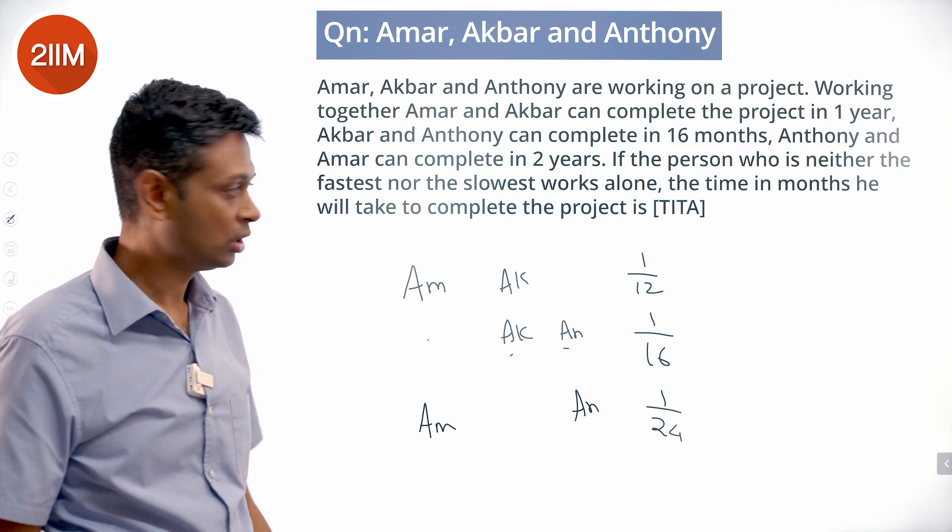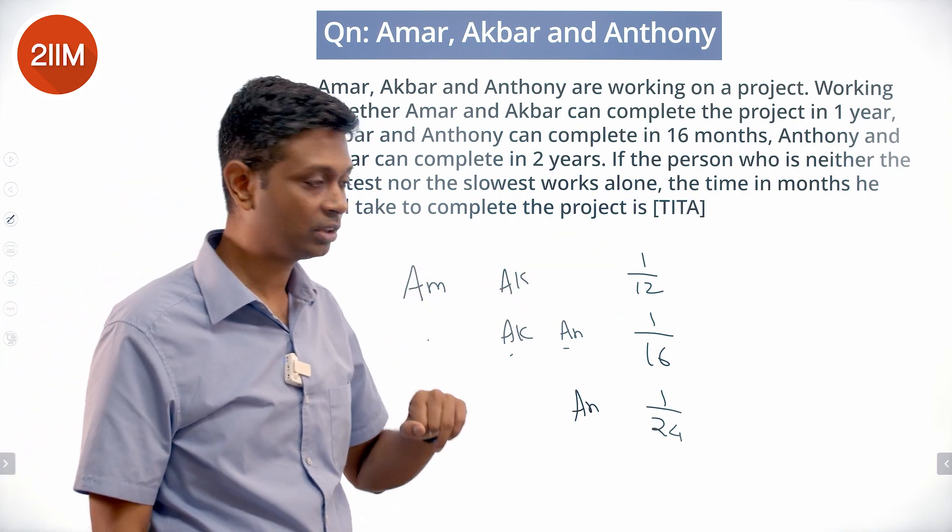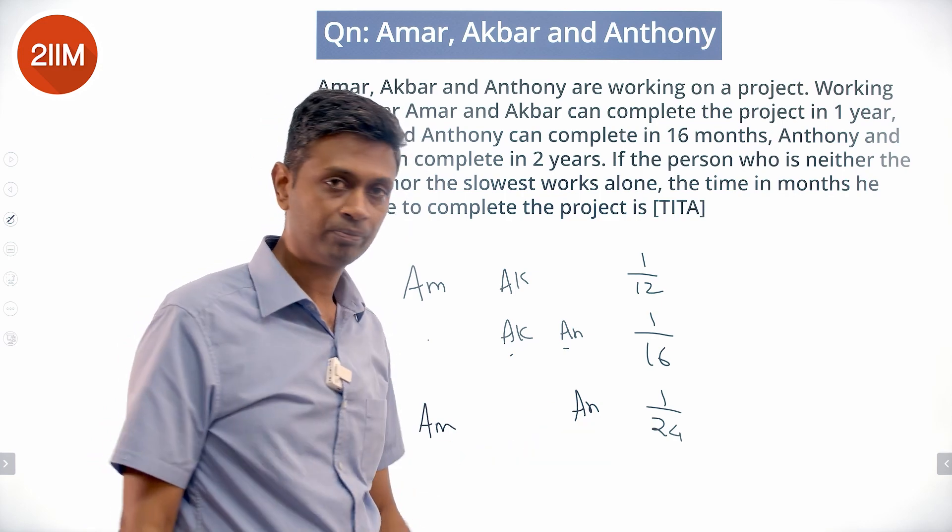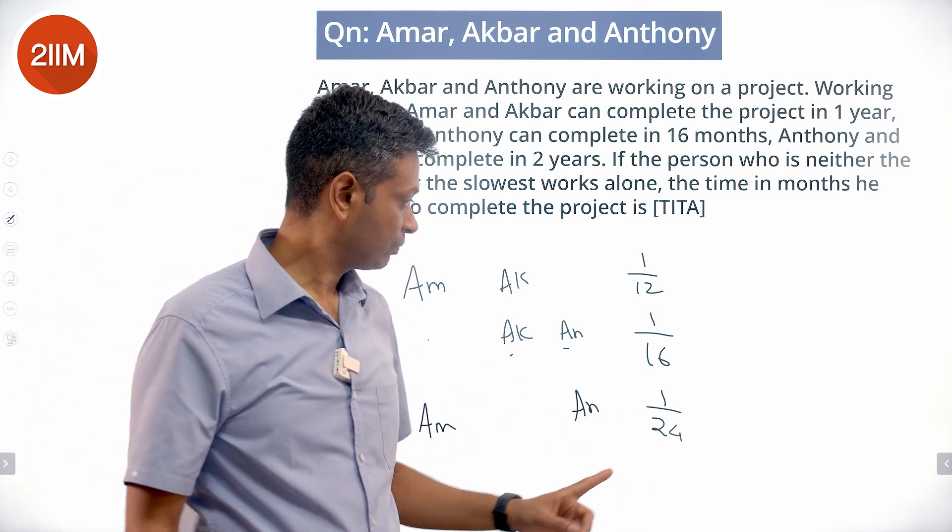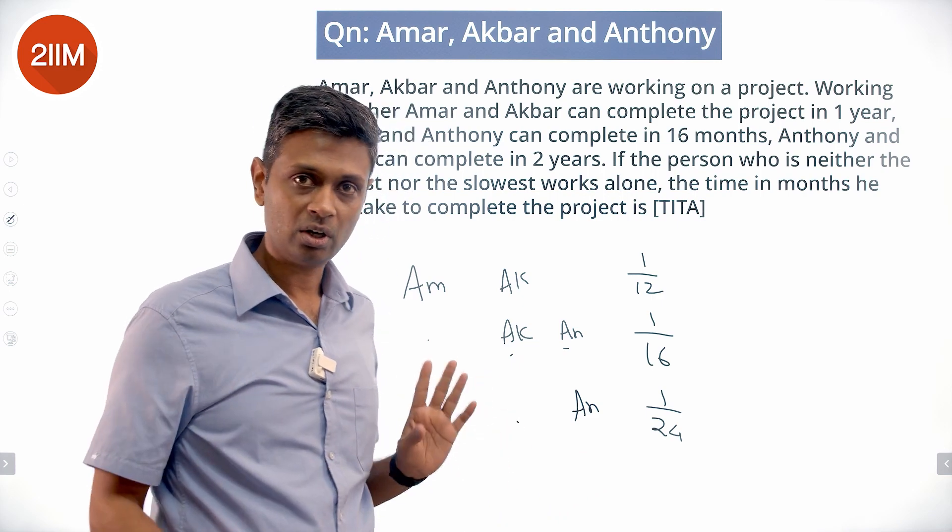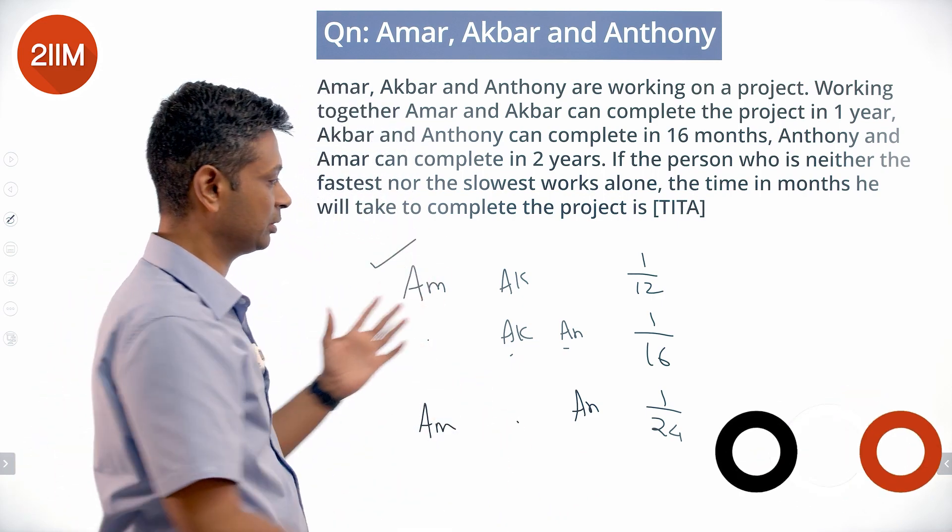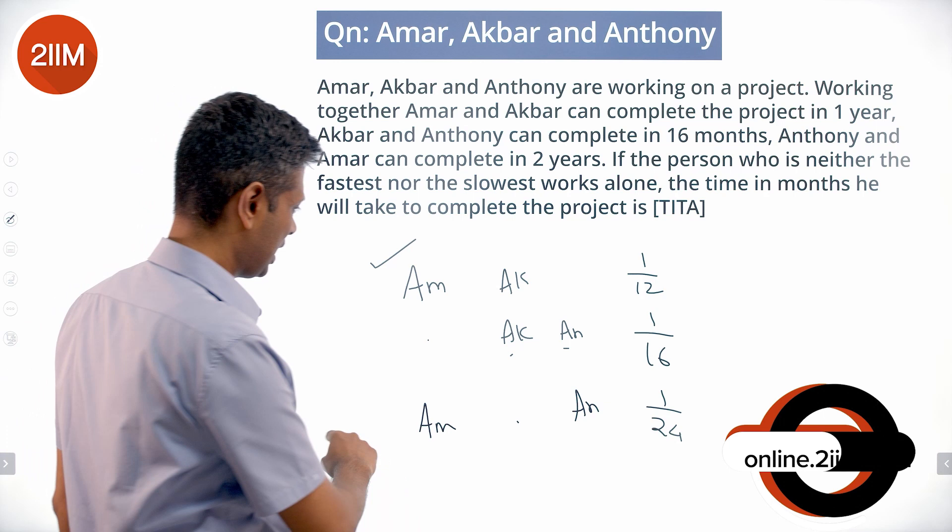Amar plus Akbar can finish 1/12, so the slowest is Anthony. Amar plus Anthony will take 24 months, so the quickest is Akbar. We want to find Amar's speed from these equations.